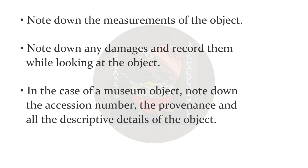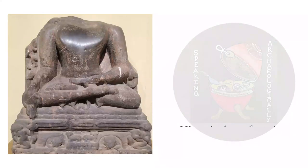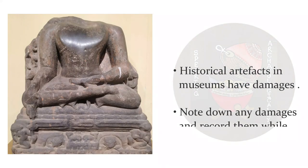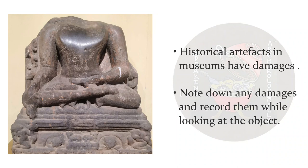When you take your notes, the first thing to do will be to measure the object. It's always advised to carry scales and measuring tapes when going for an object analysis. Also note down any damages while looking at the object. It's a historical object — chances are it's damaged. Note down any damages from all dimensions and angles. Be very specific about where the damage occurs: is it damaged on the left, upper left corner, the right, or from below? Record them while looking at the object.